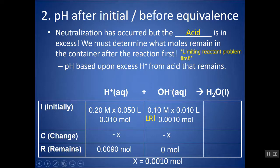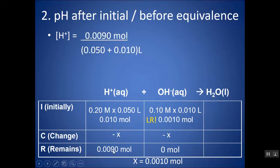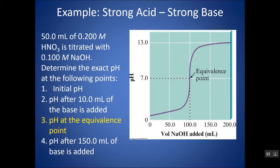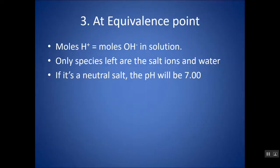Remember to convert moles to molarity before taking the negative log. For the equivalence point in a strong acid, strong base titration, the pH is automatically 7 because the only species left are water and a neutral salt — both acid and base have completely reacted.